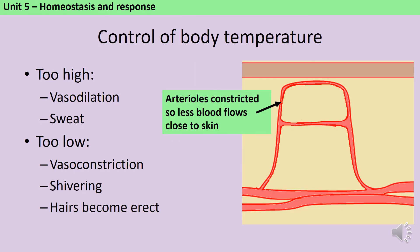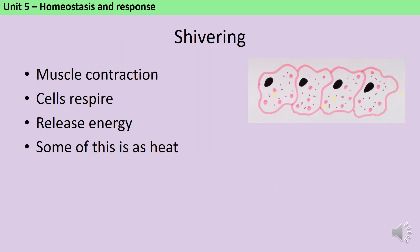In response to the body temperature falling too low there are three things the body can do. The first is vasoconstriction, which is the opposite of vasodilation. Rather than the arterioles widening so that more blood flows through the capillaries near to the skin, they constrict and tighten, meaning less blood flows through those capillaries and therefore less heat is lost. The second thing your body can do is shivering. Shivering requires the muscles to contract, and to get the energy to do this they increase their rate of respiration. This releases energy — some is used to make the muscles contract but some is lost as heat, and therefore you warm up.